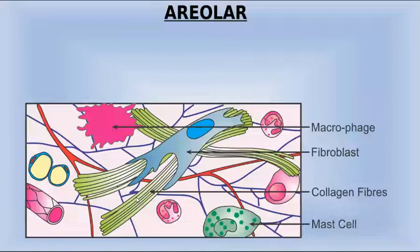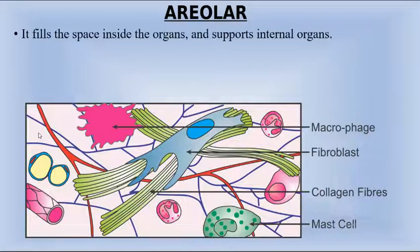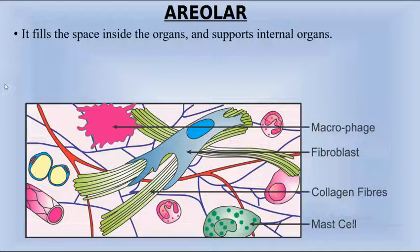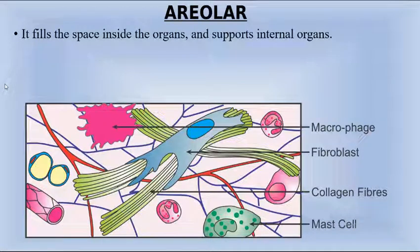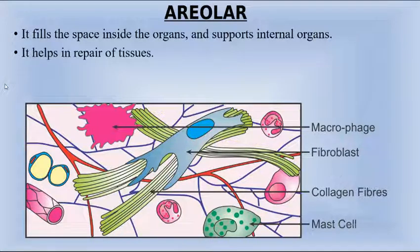The first type is areolar tissue. Here you can see the picture of areolar tissue. Areolar tissue fills the space inside the organs and supports internal organs. In our body, there are so many organs, and they are all supported by areolar tissue.